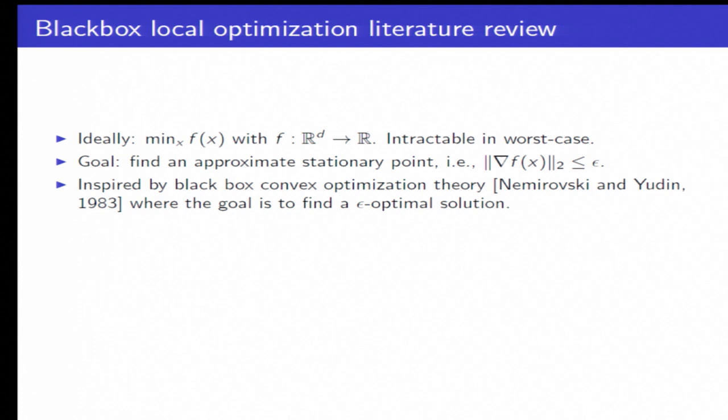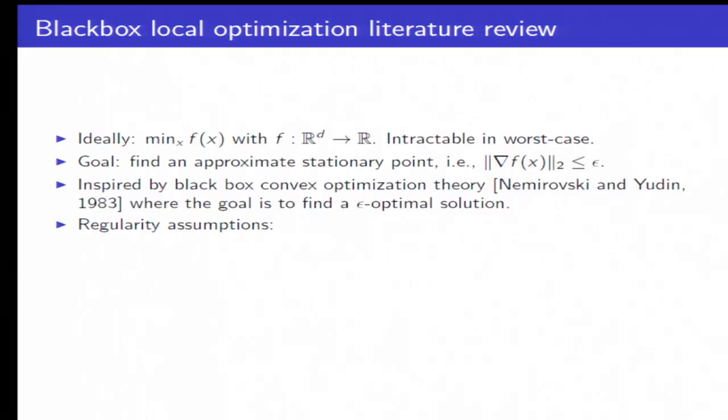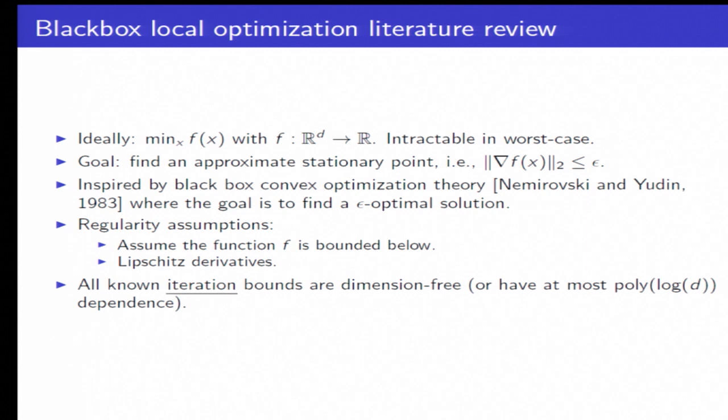And this kind of literature is inspired by the black-box convex optimization theory, initially pioneered by Nemrowski and Newton, where the goal, instead of finding an approximate stationary point, is to find an approximate optimal solution. So in this literature, the non-convex literature, much like the convex literature, you set up with some regularity assumptions on your function. So you assume the function is bounded below, and you make some assumption on the derivatives being Lipschitz. So that is, the derivatives are not moving too quickly. And in this literature, all known iteration bounds on the algorithms are dimension-free. So they have no dependence on the dimension.